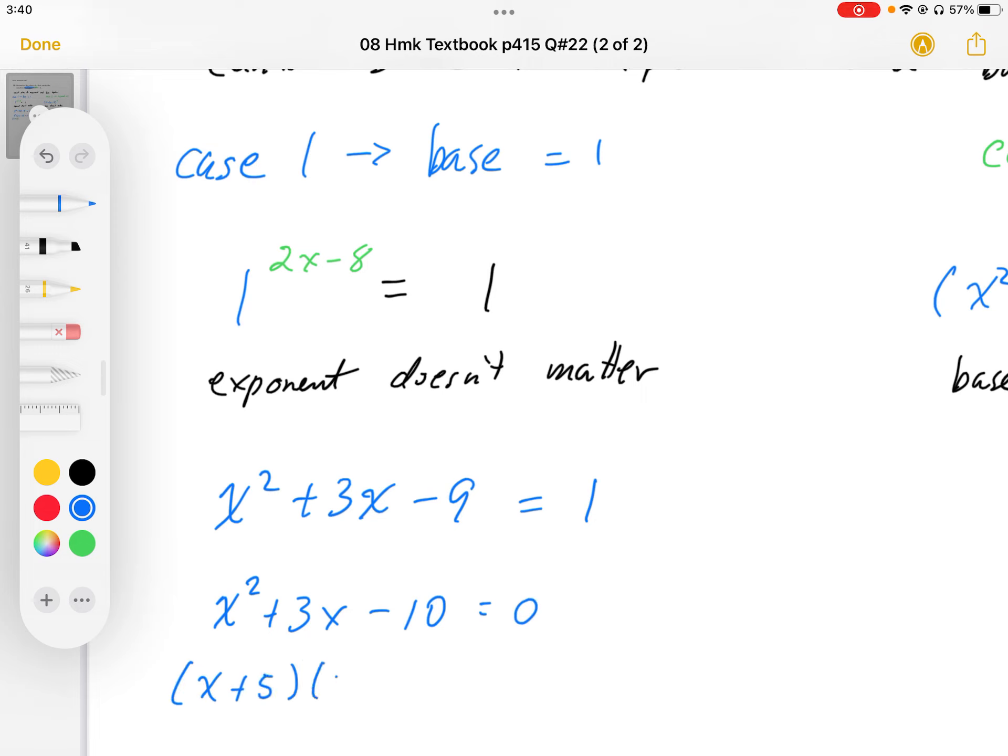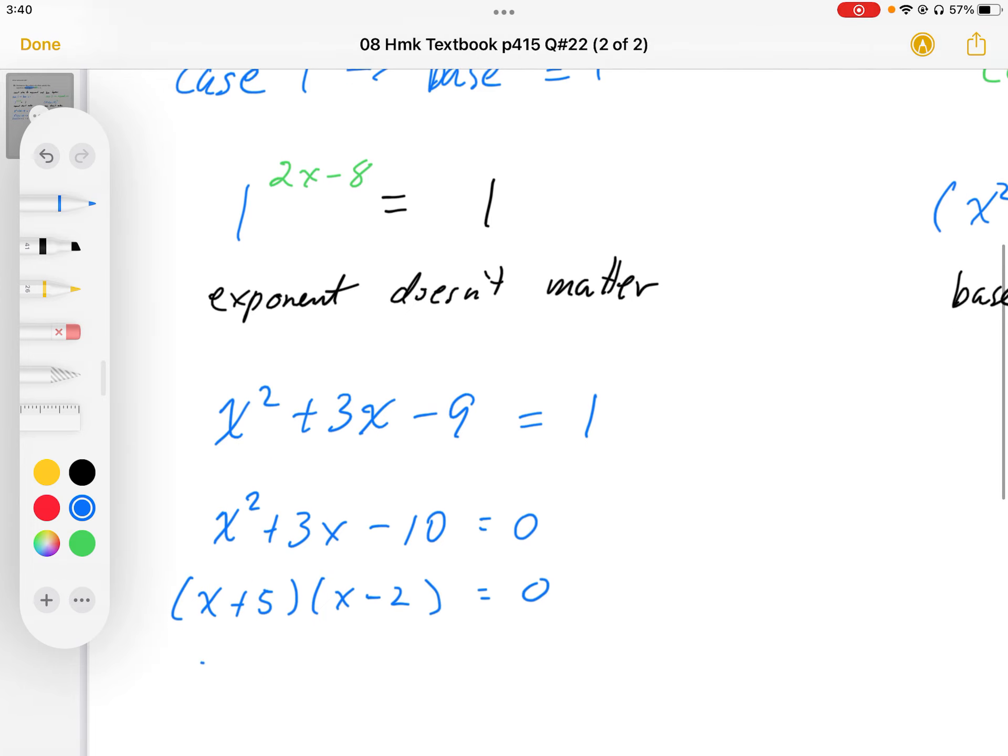We get (x + 5)(x - 2) = 0, so from here we get the solutions x = -5 and x = 2.